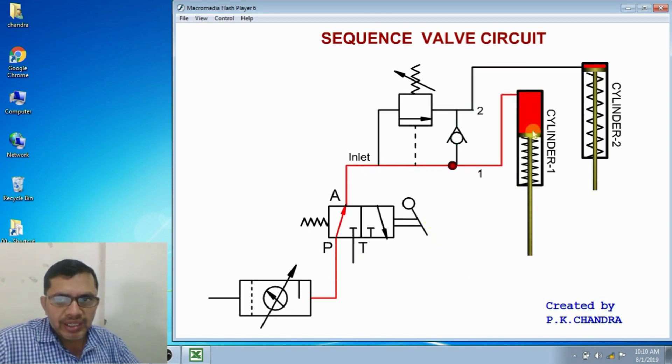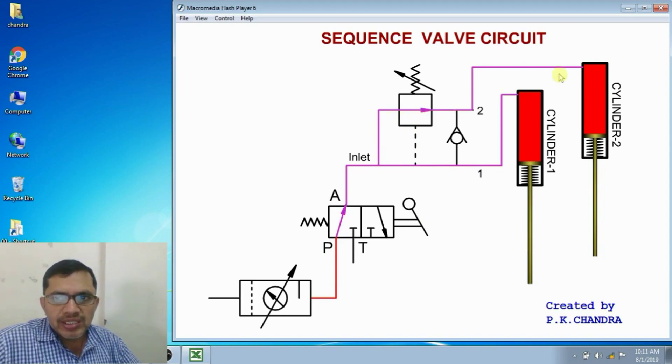In the cylinder, 1 is extending. Once the extension is completed, pressure in the line will increase. And due to which, the sequence valve will open so that the fluid flows to the second cylinder. Increase in pressure in the line causes the sequence valve to open so that fluid can flow to second cylinder.